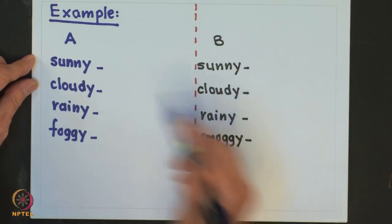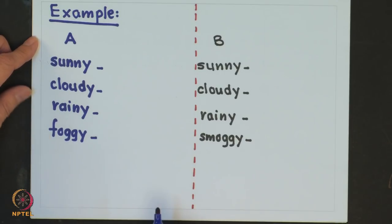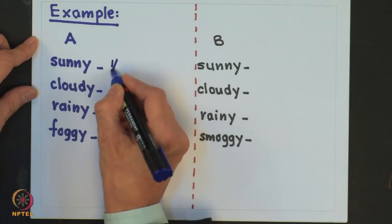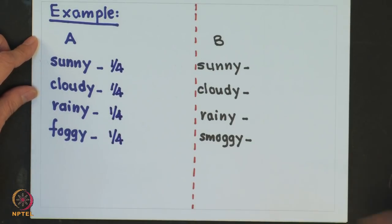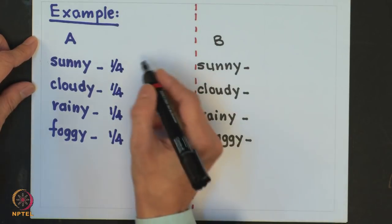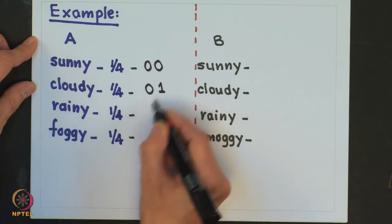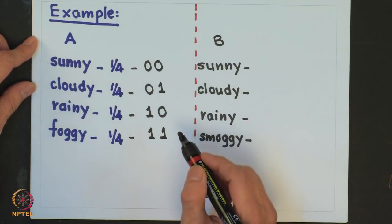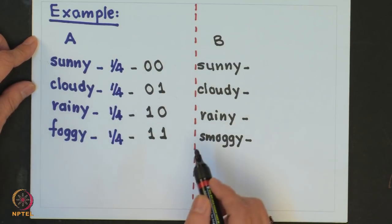We will use binary digits for the transmission — I will use the word 'binets' for binary digits. Let me also assume that the probability of occurrence of each of these messages is one-fourth, one-fourth, one-fourth, and one-fourth. Using the binets I want to label these messages. One way of doing it would be: assign 00, 01, 10, and 11. These labels assigned for each of these messages are also known as code words, and the set of code words corresponding to each of the messages is known as a code.